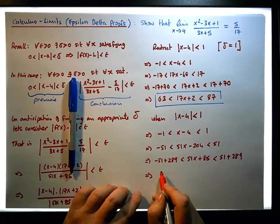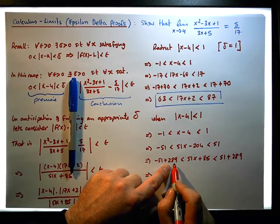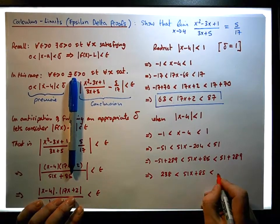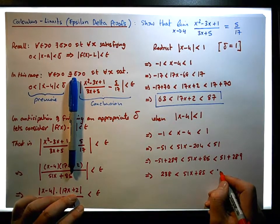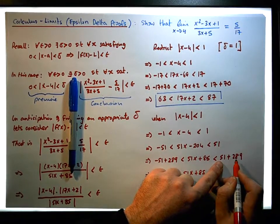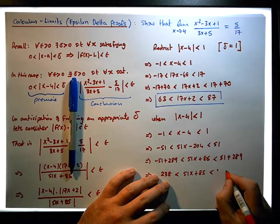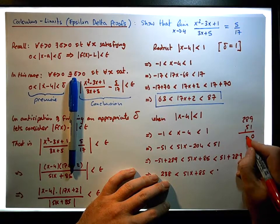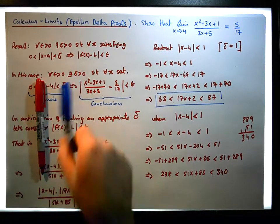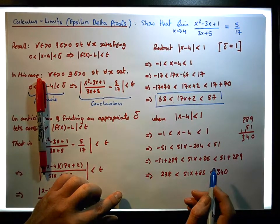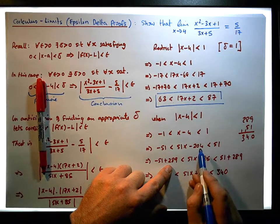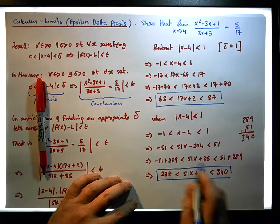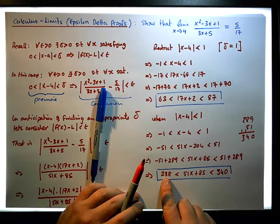When we work this out, 51 away from 289 is 248, so 248 must be less than 51x plus 85, which is less than 51 plus 289. Let's just actually do that: 289 plus 51 gives us 340. So 289 minus 204 gives us 85 — that's correct. So what we now know is that 51x plus 85 is bounded below by 248 and bounded above by 340.